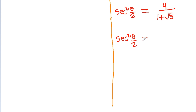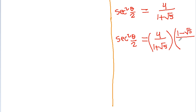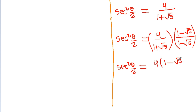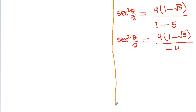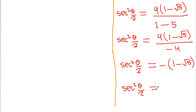sec²(θ/2) = 4/(1 + √5). Multiplying numerator and denominator by (1 − √5), we get 4·(1 − √5) divided by (1² − (√5)²) = 4·(1 − √5) by (1 − 5) = 4·(1 − √5) by (−4). This gives sec²(θ/2) = −1·(1 − √5) = √5 − 1. So the value of sec²(θ/2) is √5 − 1.